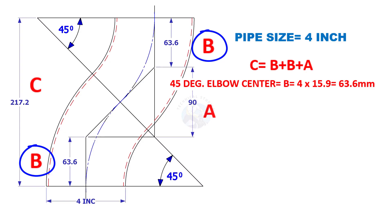Elbow center B is four inch multiplied by fifteen point nine. Fifteen point nine is constant. So the value of B equals sixty-three point six millimeters.